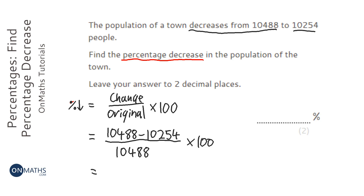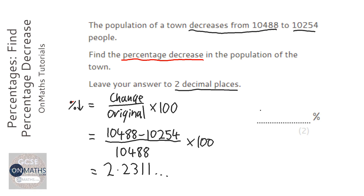And I get the answer 2.2311... So to two decimal places, it's going to be 2.23.